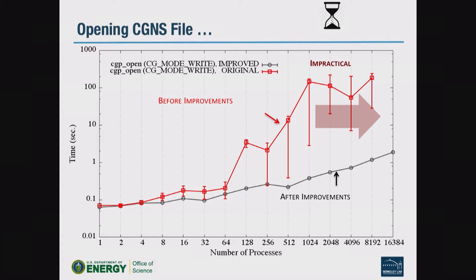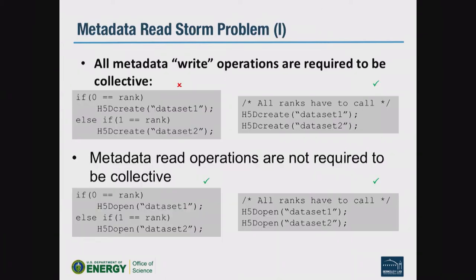Another application-level example: CGNS is a very common standardized CFD file format used in aerospace — NASA, Boeing, etc. They had their own ADF file format for a long time, then added a plug-in for HDF5. The problem was that on file open, all processes were collectively reading dataset A, then all reading dataset B — essentially a denial-of-service attack on your file system. Similarly on close, everybody was flushing everything repeatedly. We added collective metadata improvements plus the multi-dataset reads and writes, and the scalability improved dramatically — from going off the chart to leveling off nicely. You can get two orders of magnitude improvement with some optimization on HDF5 code.